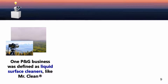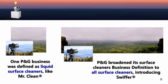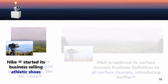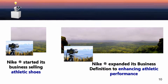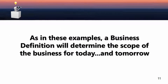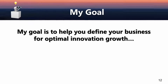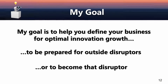One of P&G's businesses was defined as liquid surface cleaners, like their Mr. Clean product. P&G broadened its surface cleaners business definition to all surface cleaners, introducing products like Swiffer. Nike started its business selling athletic shoes, then expanded its business definition to enhancing athletic performance. As in these examples, a business definition will determine the scope of the business for today and tomorrow. My goal is to help you define your business for optimal innovation growth — to be prepared for outside disruptors, or better, to become one of those disruptors yourself.